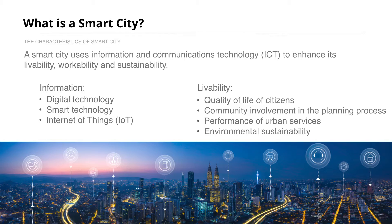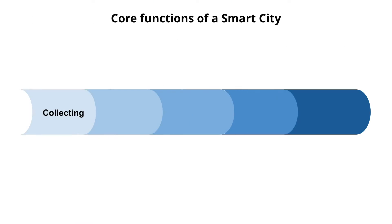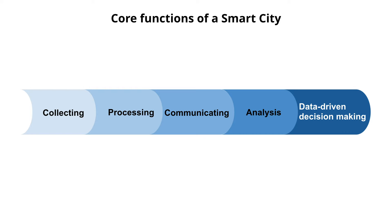No matter how we define smart cities, the core functions of a smart city relate to five steps: collecting data, processing, communicating, analysis, and finally making data-driven decisions.